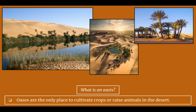Oases are the only place to cultivate crops or raise animals in the desert. You can see here a couple of examples — some kind of pond or maybe mini lake. When I think of an oasis I think of palm trees, but it's going to have to have green and water to work.